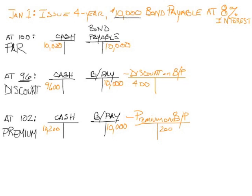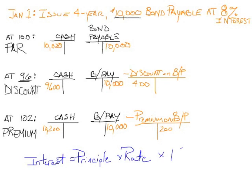We do have to pay interest on this bond. Bonds pay interest semi-annually. Interest is a write-off if we're paying it, so we will have interest expense in all three cases — because it doesn't matter how we sold it, par, discount, or premium, we're still going to have to pay the 8% annual interest. The formula is: interest equals the principal (the face value of the bond), times the rate, times the time that the interest is accruing.